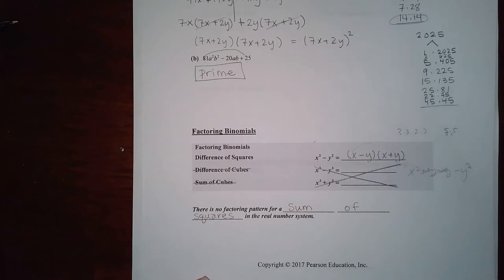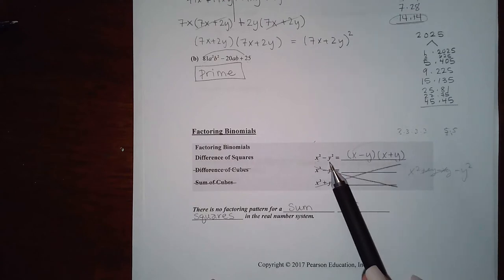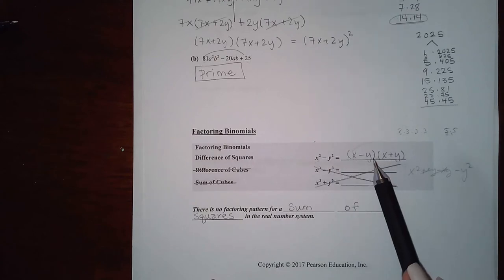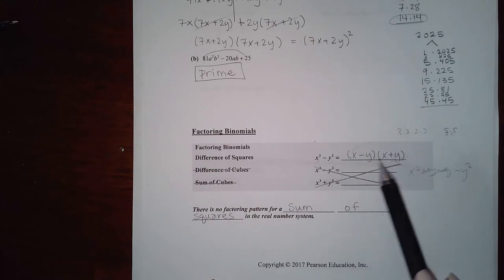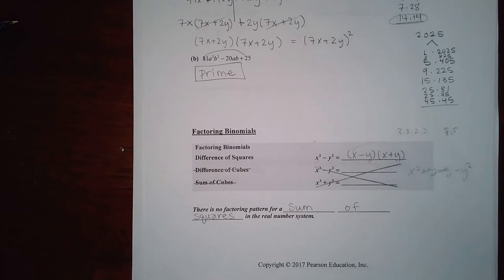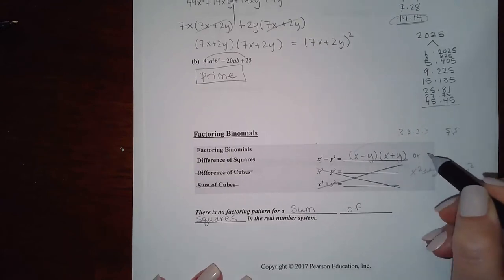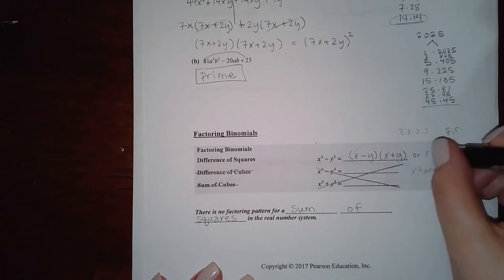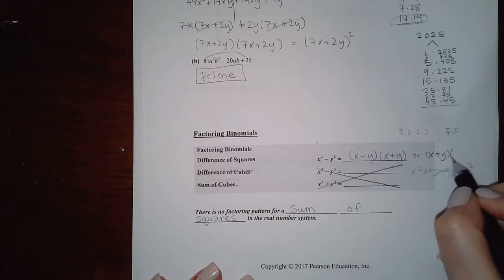Okay, so once you identify what is being squared here, you just put it in the front of the parentheses. Once you figure out what is being squared here, you put it in the back of the parentheses. And then one of these guys should have a plus and the other one should have a minus, and the order does not matter. You could write it as x plus y times x minus y and it's still the same factorization.